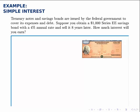Here's a simple interest example. Treasury notes and savings bonds are issued by the federal government to cover its expenses and debt. Suppose you obtain a $1,000 Series EE savings bond with a 4% annual rate and sell it back 8 years later. How much interest will you earn?